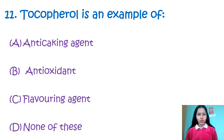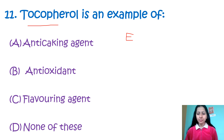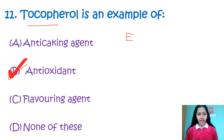Question 11: Tocopherol is an example of — option A: anti-caking agent, B: antioxidant, C: flavoring agent, D: none of these. Tocopherol is an antioxidant. We know it as vitamin E — tocopherol is another name for vitamin E. It is also known as the anti-sterility vitamin or fat-soluble vitamin. So the correct option is B, antioxidant.